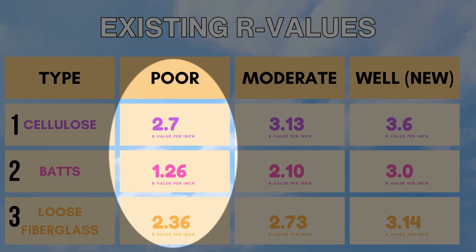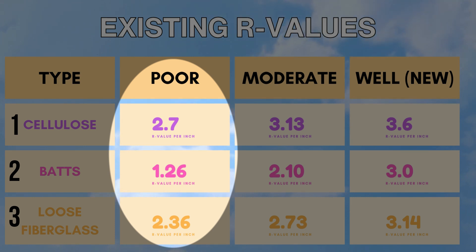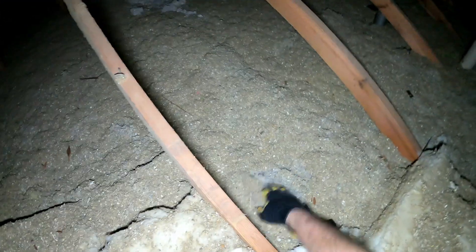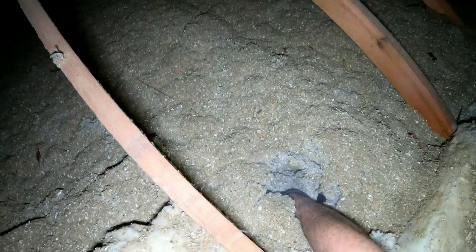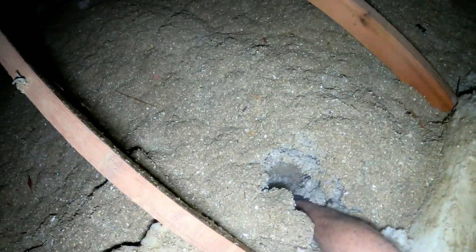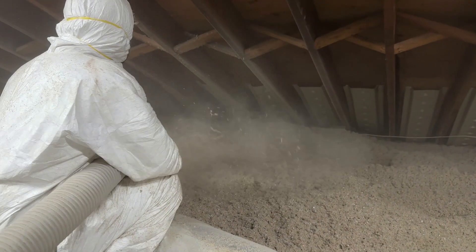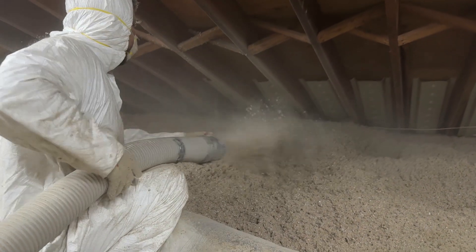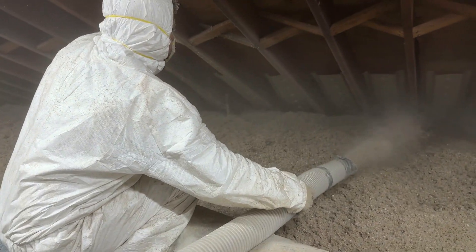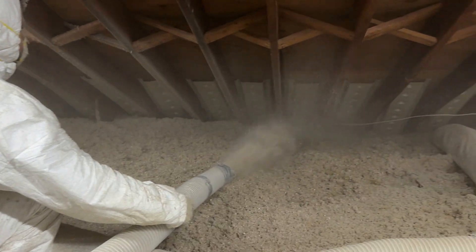It is interesting to note how much more forgiving loose cellulose is compared to batts, meaning it doesn't have to be a perfect install, especially in those tight spots. Cellulose loose fill insulation appears gray and contains visible bits of newspaper. When disturbed, it is notably dustier than other materials. With proper air sealing and ventilation, cellulose is a great solution for attics in most climates.